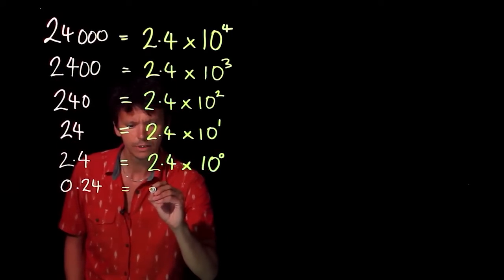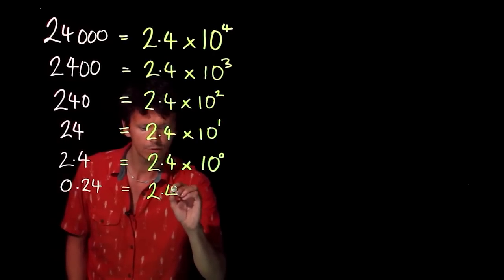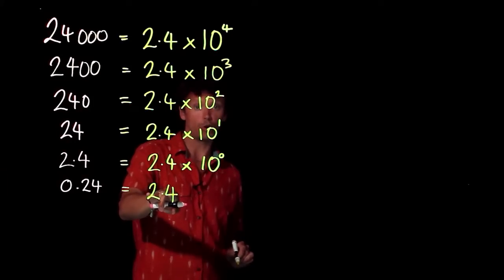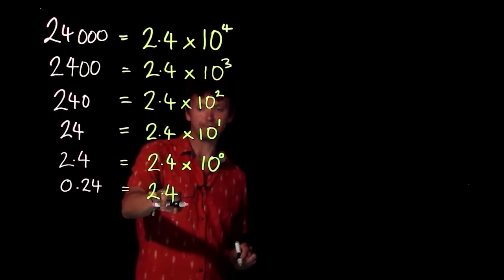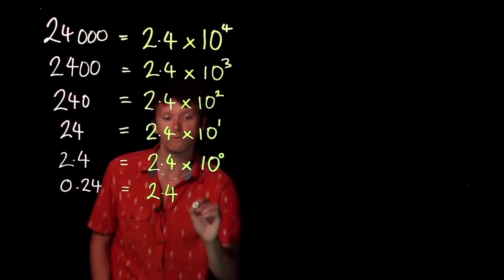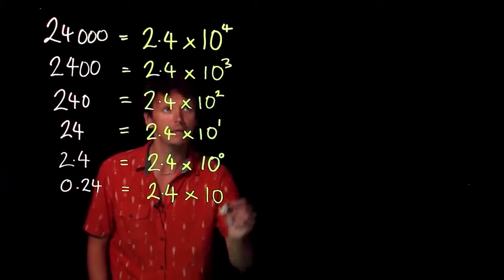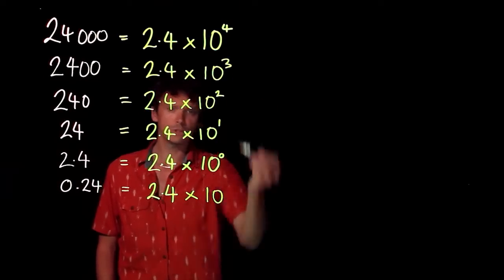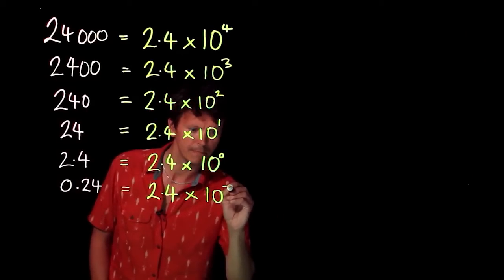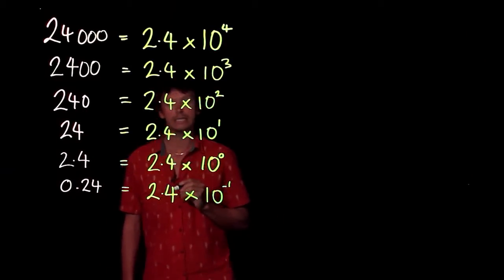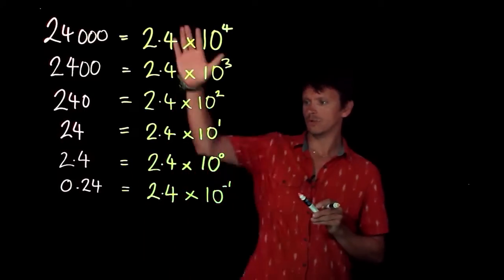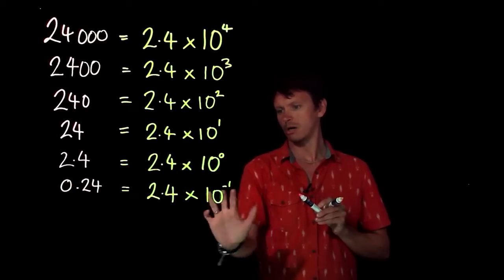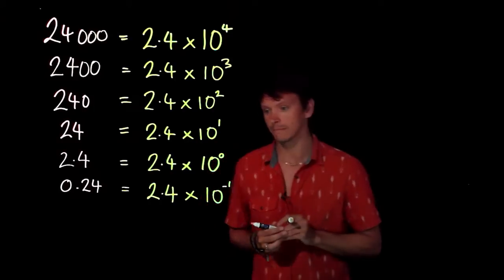For scientific notation, we still got to start with 2.4 because we've got to have a number that's 1 or above and less than 10. What do you think is going to be our power? 4, 3, 2, 1, 0... we're just reducing by 1 each time, so our power now is minus 1. We've got 2.4 times 10 to a negative power.